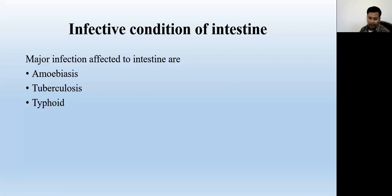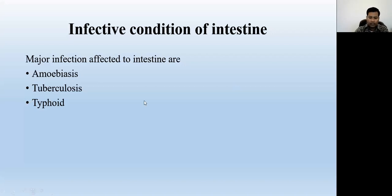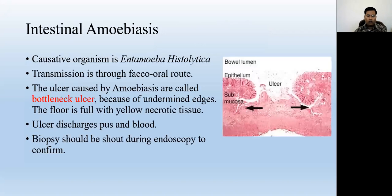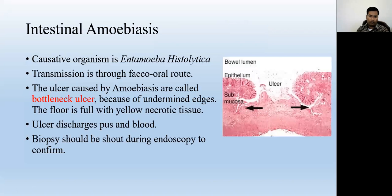The major three infections that are more common in the intestine are amoebiasis, tuberculosis, and typhoid. Some others may be present, but these are the three most common specific infective conditions of the intestine. We will discuss them one by one. You already had these things in pathology, so this is just a reminder.